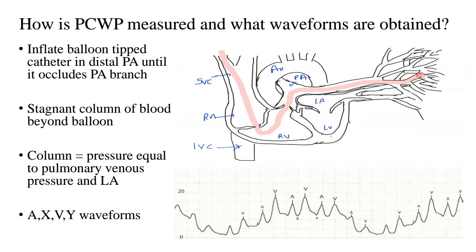The balloon-tipped Swan-Ganz catheter has a balloon at its tip which is inflated in the distal pulmonary artery until it occludes that pulmonary arterial branch. As a result, a stagnant column of blood is formed beyond the balloon, through the capillary network and into the pulmonary veins up to the LA. This stagnant column measures the pressure equal to the pressure in the pulmonary vein and the left atrium. So essentially, wedge pressure reflects LA pressure, derived by balloon-occluding a distal pulmonary arterial branch.